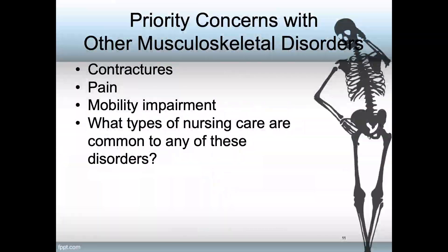With all musculoskeletal disorders, priorities include control of contractures, managing pain, and maintaining mobility. Nursing care that is common to all of these is maintaining safety. Ultimately, the nurse has to consider the patient's safety. These patients are at risk for airway and breathing problems and from all of the complications related to immobility — that is GI problems, nutritional problems, elimination problems, and skin problems.